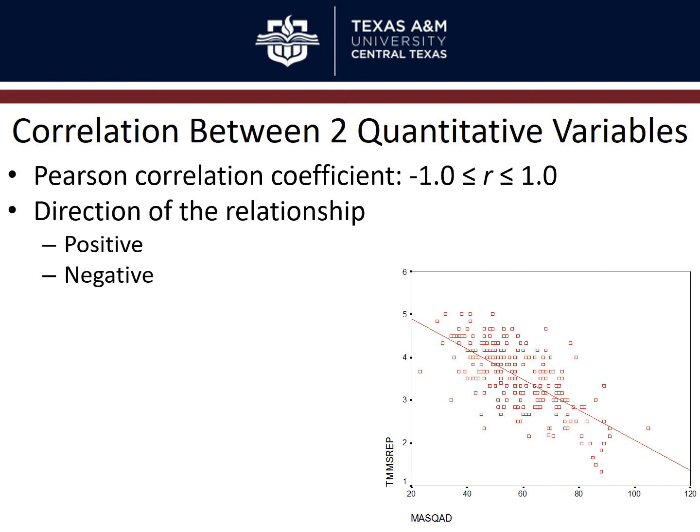You can also have a negative relationship. Looking at two negatively correlated variables: lower scores on one are associated with higher scores on the other, and higher scores on one are associated with lower scores on the other — they're inversely related. As you increase on one, you decrease on the other. They co-vary in opposite directions.